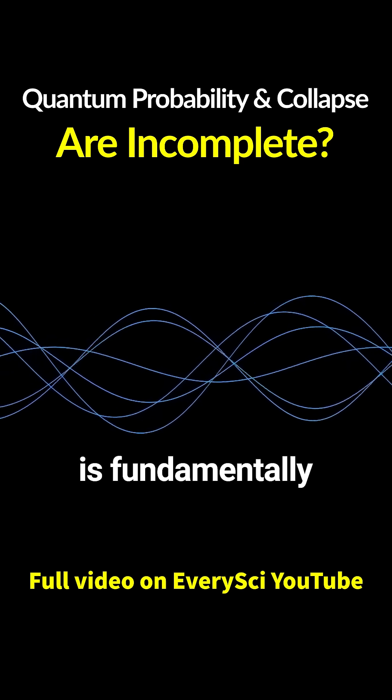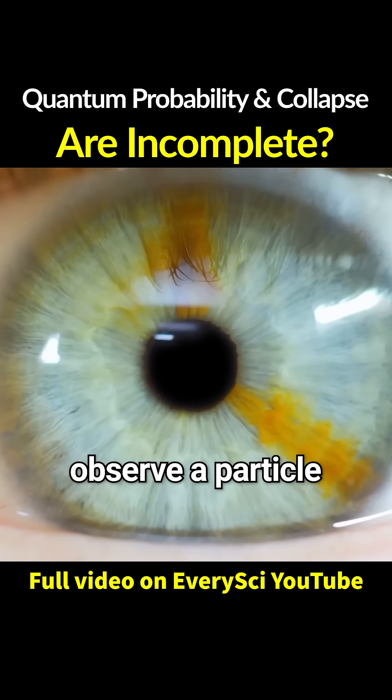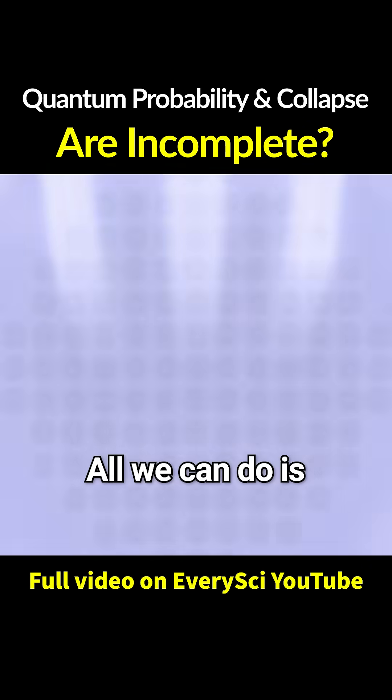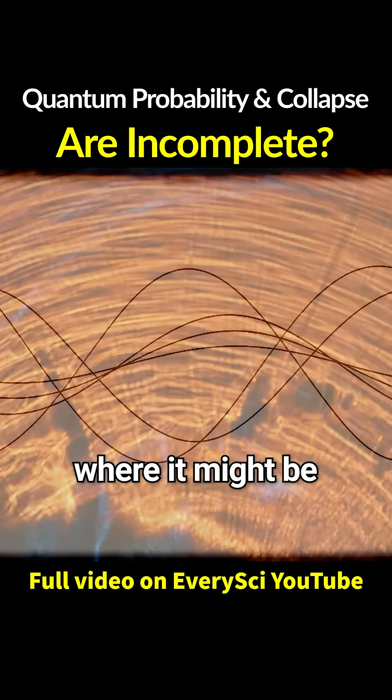The quantum world is fundamentally uncertain. Until we observe a particle, we can't say exactly where it is or how it's moving. All we can do is talk about the probability of where it might be.